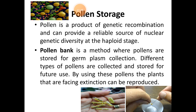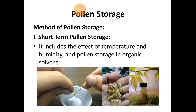The next concept is pollen storage. Pollen is a product of genetic recombination and provides a reliable source for nuclear genetic diversity at its haploid stage. A pollen bank is a method where pollens are stored for germplasm collection. Different types of pollen are collected and stored for future use. By using these pollens, plants facing extinction can be reproduced. The slide shows different types of pollen and the method of how pollen are collected and stored in a pollen bank.